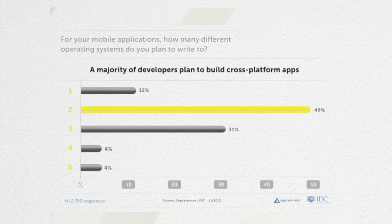From that same survey we asked how many different operating systems developers plan to develop to in 2013. Developers aren't developing for every operating system — everybody has limited resources. Most developers, 49%, were developing to two operating systems. So you have to pick and choose where to spend your time and your resources.